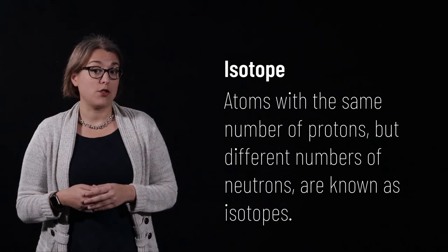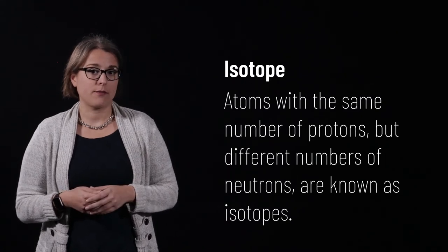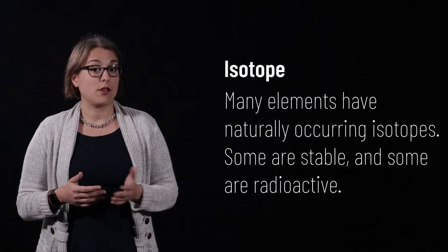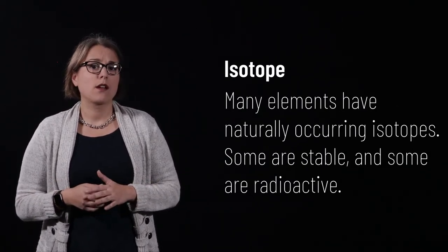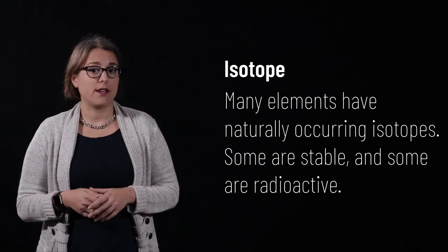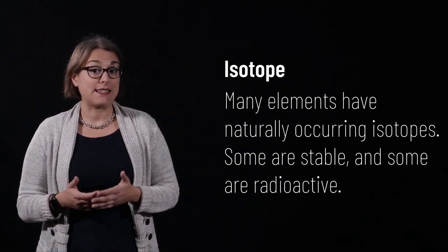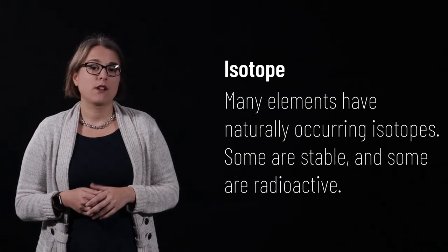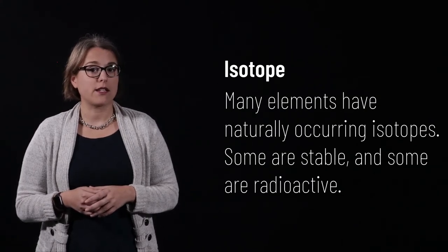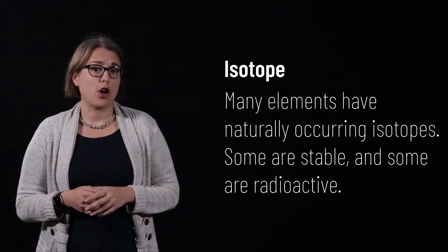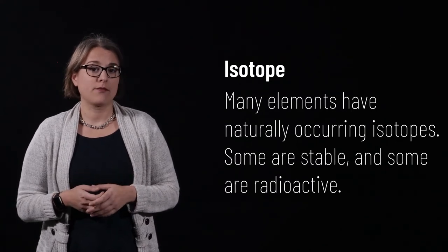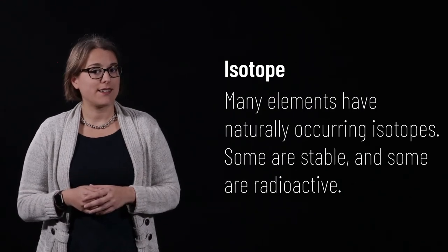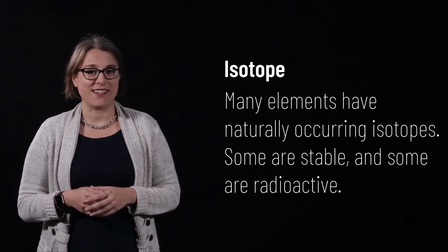Elements that have different numbers of neutrons are known as isotopes. Many elements have isotopes that occur naturally. Some are stable, and some are radioactive. Carbon-12 is the most abundant isotope of carbon. It is a stable isotope and is present in all organic matter. Carbon-14 is less abundant and is radioactive. This isotope of carbon is used in carbon dating. The ratio of carbon-12 and carbon-14 in an organic substance can tell us how old that object is.